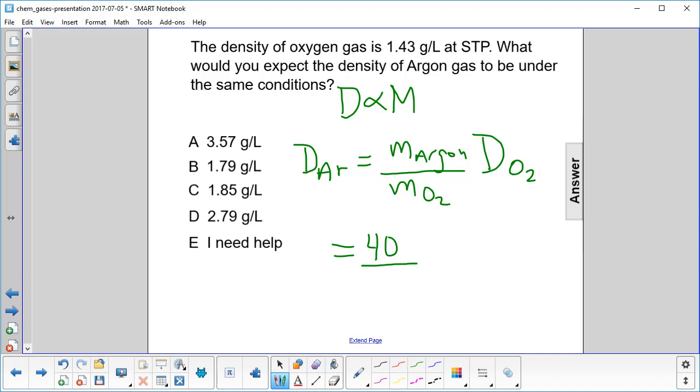Our molar mass of oxygen, oxygen is 16. There's two of them, so that's 32. And those units will cancel out.